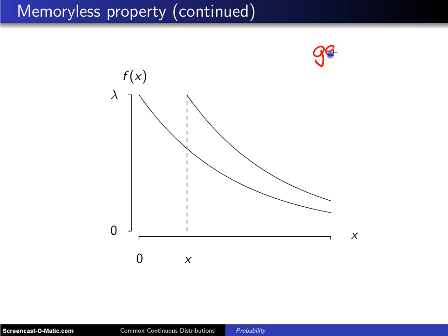Here is the geometry associated with the memoryless property. Let's say we have a brand new light bulb, and this probability density function right here, which starts at height λ, and simply decreases according to λe to the minus λx. That's what the lifetime of the light bulb looks like.